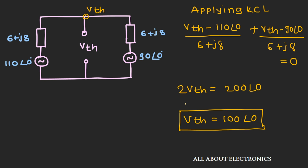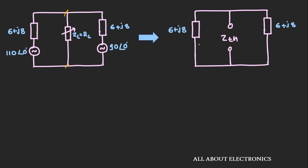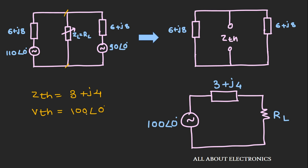Now let's find the Thevenin's equivalent impedance. Removing the load and shorting all voltage sources, the two impedances are in parallel and both have the same value, so Zth = 3 + j4. Since the load is purely resistive, for maximum power transfer RL = |Zth| = √(3² + 4²) = √25 = 5 Ω.